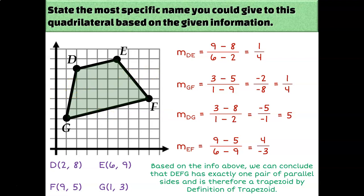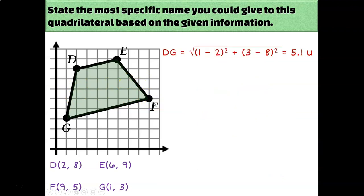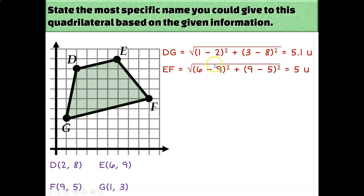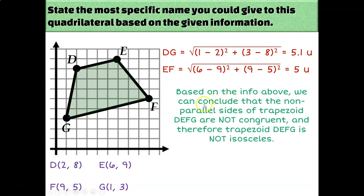But could I give it a more specific classification? Is this isosceles? It kind of looks like the two non-parallel sides are the same length, so let's prove it. DG has a length of about 5.1 units when I plug the points into the distance formula. But EF is 5 units. That's why it's so important that you actually show the work — your eyeballs cannot tell the difference between 5 units and 5.1 units. Based on all our information, this is just a trapezoid, but it's not isosceles.